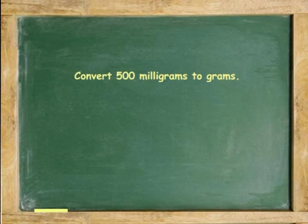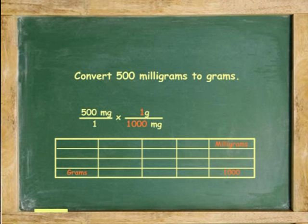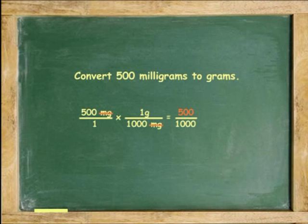Another example: Convert 500 milligrams to grams. 500 milligrams over 1 times 1 gram equals 1,000 milligrams. 500 times 1 equals 500. 1 times 1,000 equals 1,000. Divide 500 by 1,000. 0.5 grams is the answer.